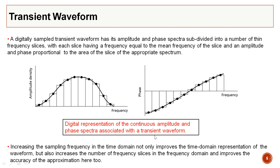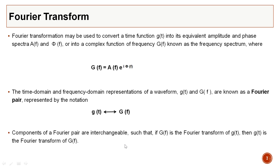This is the digital representation of the continuous amplitude and phase spectra associated with the transient waveform. If you increase your sampling frequency — for example sampling at 2 milliseconds instead of 4 milliseconds — you improve your reconstruction of the waveform. A higher sampling frequency means more frequency slices in the frequency domain and improves accuracy.